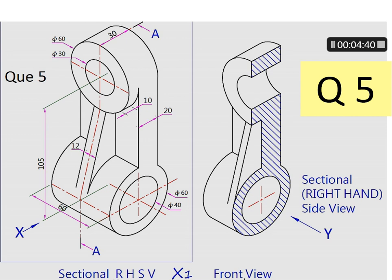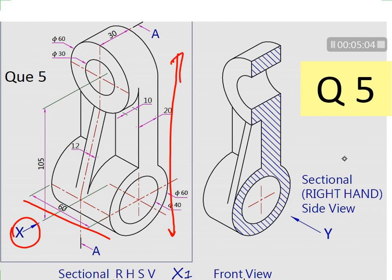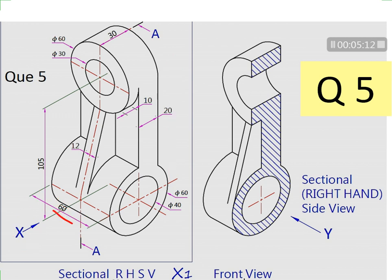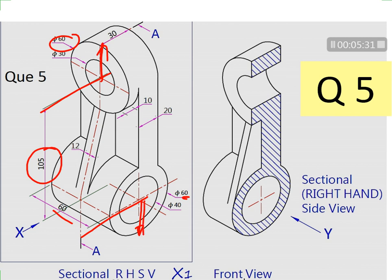Now let's discuss one question on orthographic projections. We will discuss how to draw this problem in 30 minutes. First find out the total length, width, and height. In the front view you can see two dimensions as length and the total height of the object. Total length is 60 as mentioned. The center-to-center distance between the two circles is 105, and the outer circle radius is 30 on each side. So 30 plus 105 plus 30 gives a total height of 165mm.